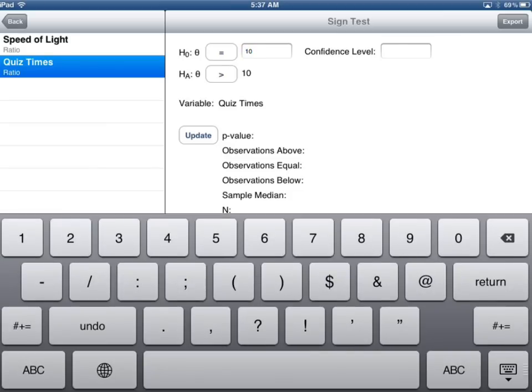I need to enter the null and alternative hypothesis. I'll set this to equals 10. And again, this confidence level is not needed. If you're going to do a confidence interval, then you would need it. But if you're not interested, which I really don't care about right now, I'm just going to leave it blank.